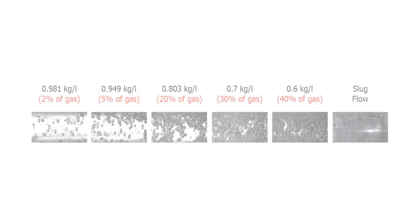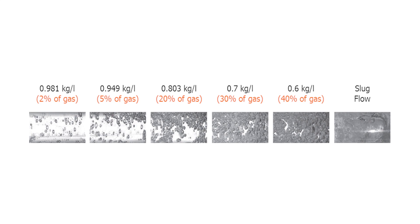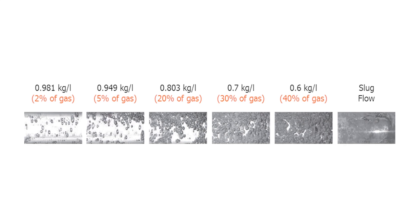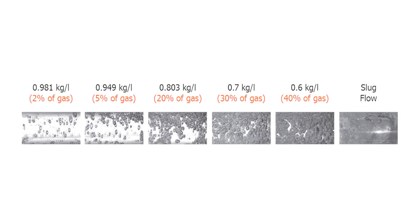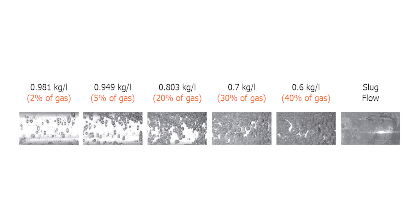The entrained gas in the oil-water emulsion could range from 2% to as high as 40%. This entrained gas, or GVF, in the oil-water emulsion will cause two major impacts on the Coriolis flow meter's performance.